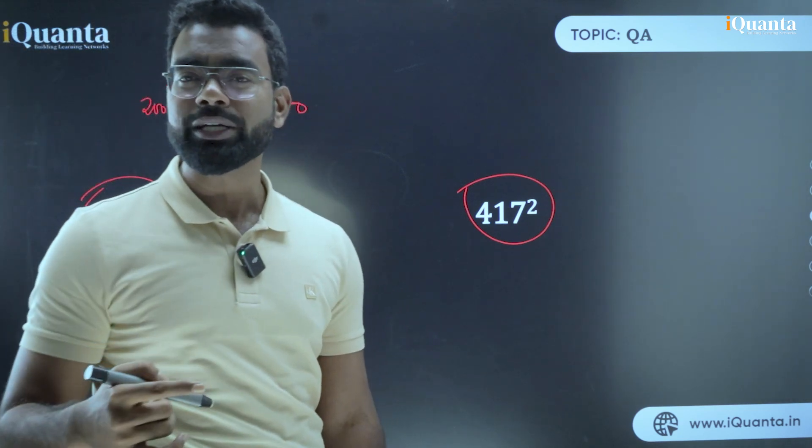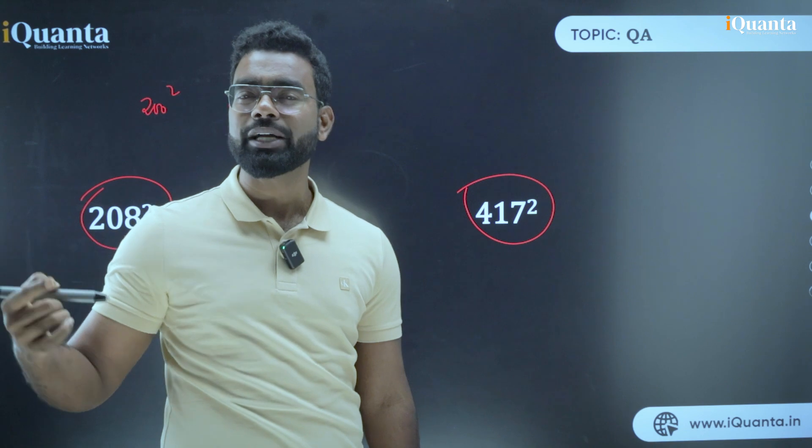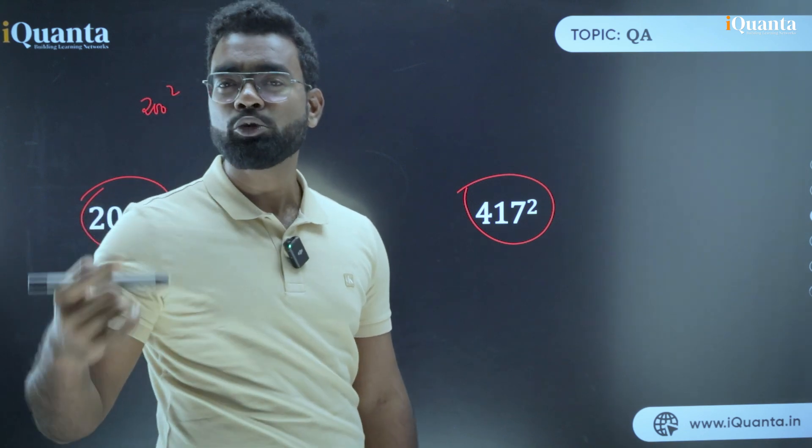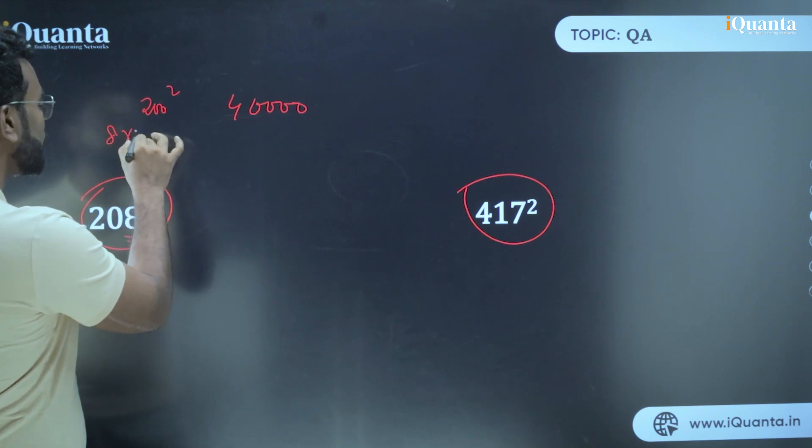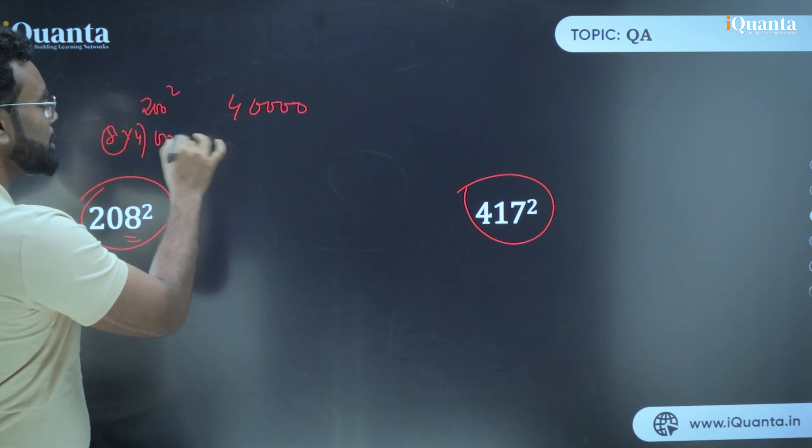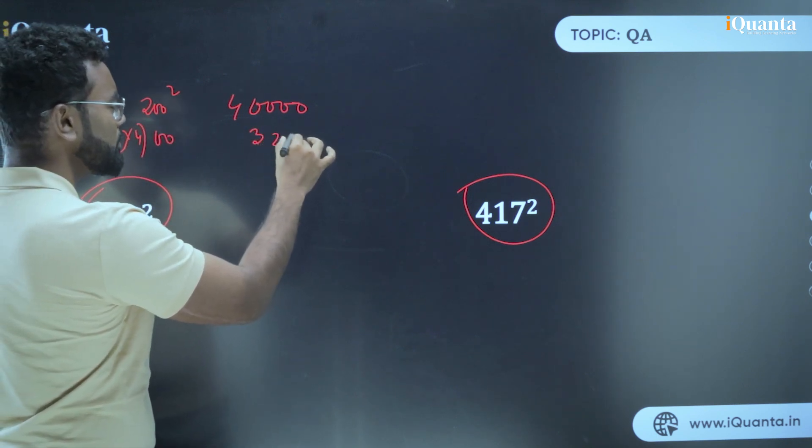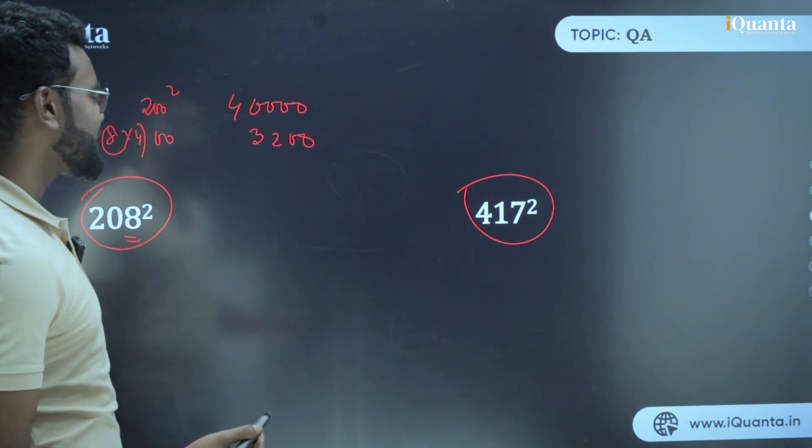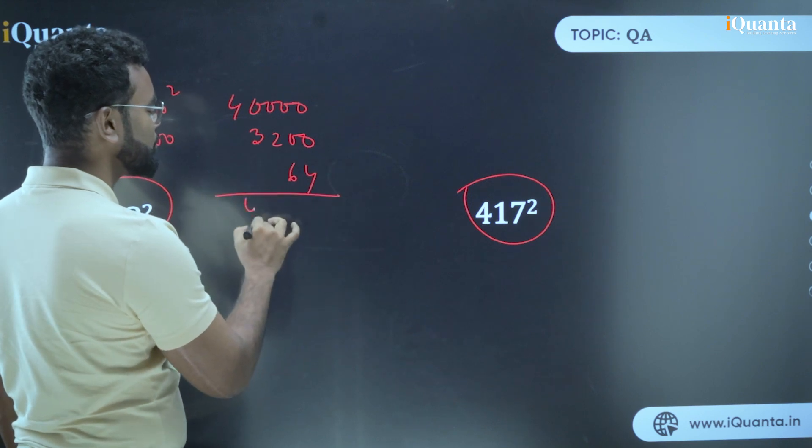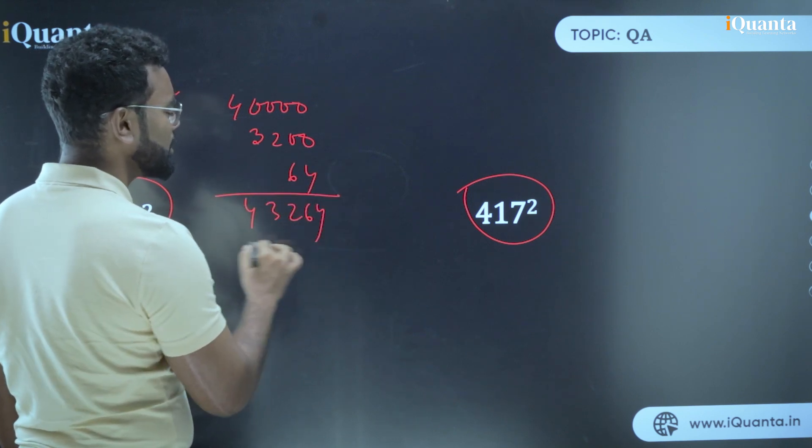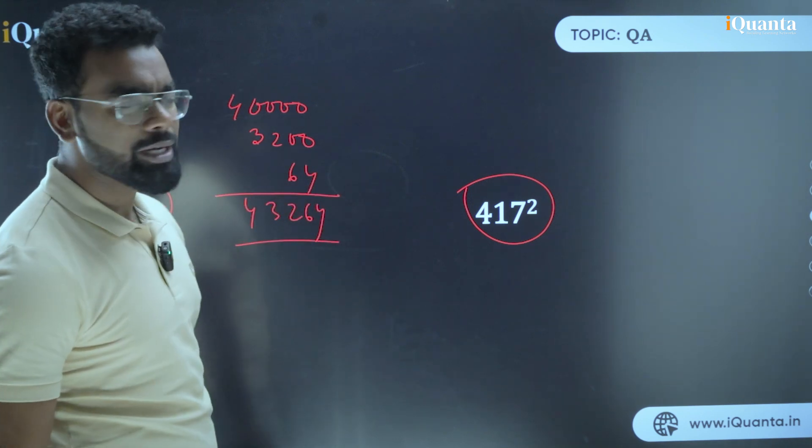Now what is extra? 8. In case of 50, I add extra into 100. In case of 100, I add extra into 200. In case of 150, we add extra into 300. In case of 200, we add extra into 400. So it is basically 8 into 4, that much 100. So it is 3200. Now in case if it is 3200, next is last, which is always the same - the extra square, which is 64. So your answer is 43,264.